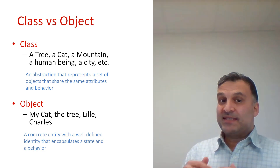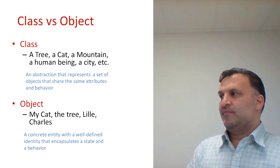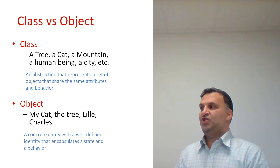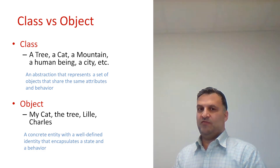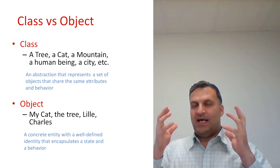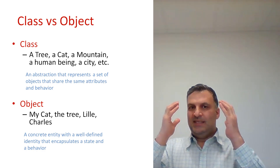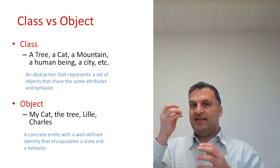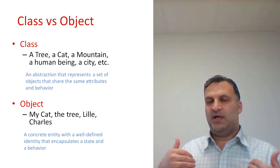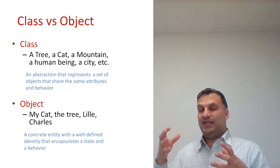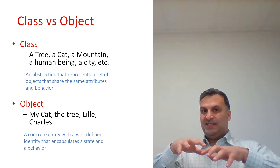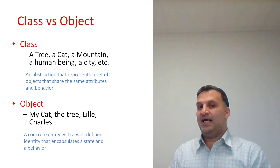A class is an abstraction that represents a set of objects that share the same attributes and behavior. When we think about a tree, we get these attributes from all the trees we saw during our life. We make an abstract entity from these real entities to create this class.